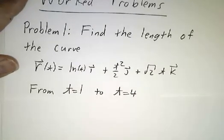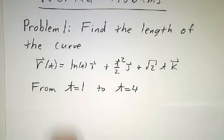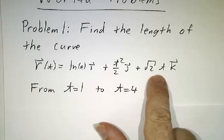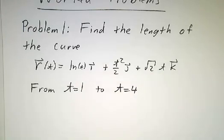So the first problem is to find the length of a curve. We're given the curve r of t is natural log of t in the x direction, t squared over 2 in the y direction, root 2t in the z direction, and we have to figure out the length of the curve.